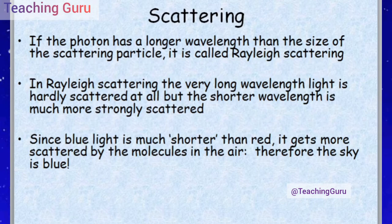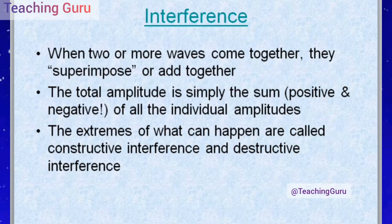In Rayleigh scattering, very long wavelength light is hardly scattered at all, but shorter wavelength light is much more strongly scattered. Since blue light has a much shorter wavelength than red, it gets more scattered by the molecules in the air — therefore the sky is blue. In many traffic signals, red light is used because red light scatters very little.